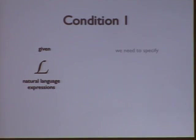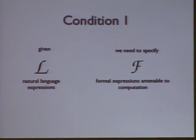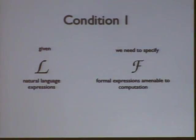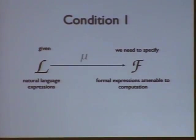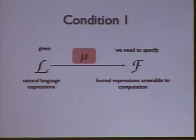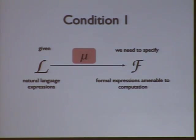To put it in symbols: we start with a set of natural language expressions L, and we want to get to formal expressions defined in some formal language and apply computations over them. We want to find a process mu that allows us to get there. There may be some issues with where contextual knowledge goes here, and we haven't committed to a particular theory on that.